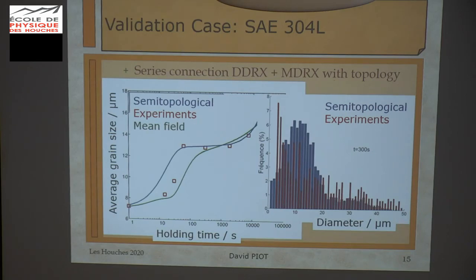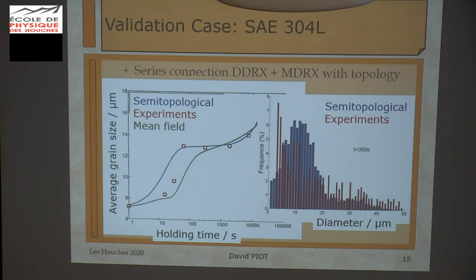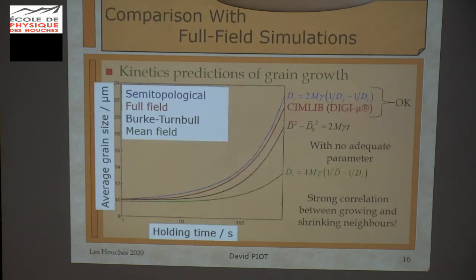For the metadynamic recrystallization during holding time, here you have the experimental grain size and the two kinetics coming from the standard model and the semi-topological model — both are quite correct. And here you have a comparison with the semi-topological grain size prediction against the experimental one after 300 seconds — it's not perfect, but it's not so bad.